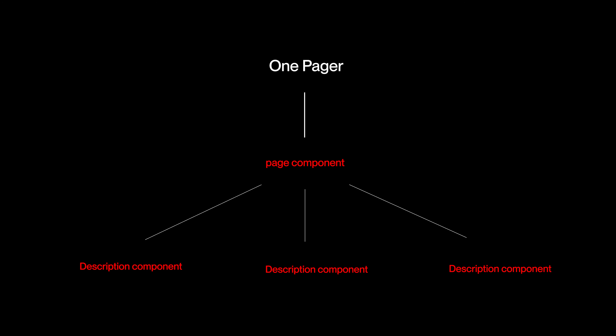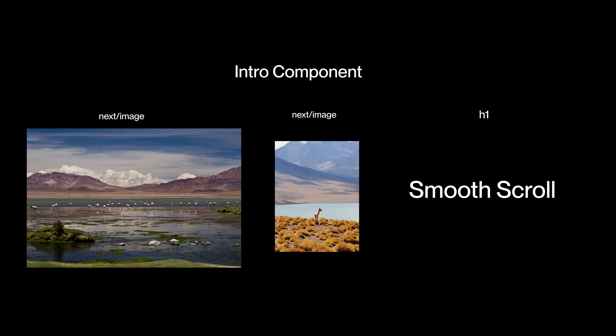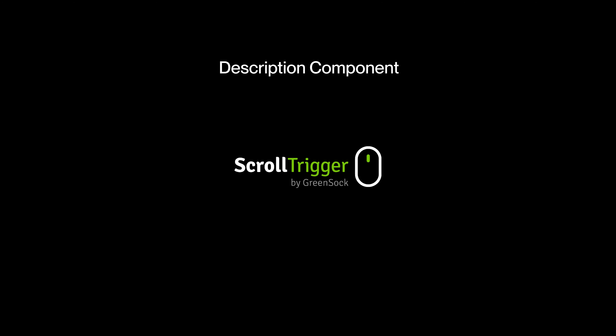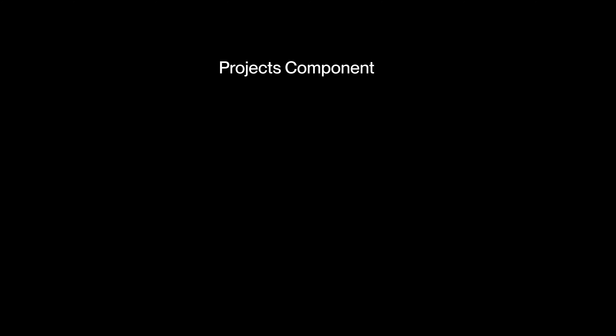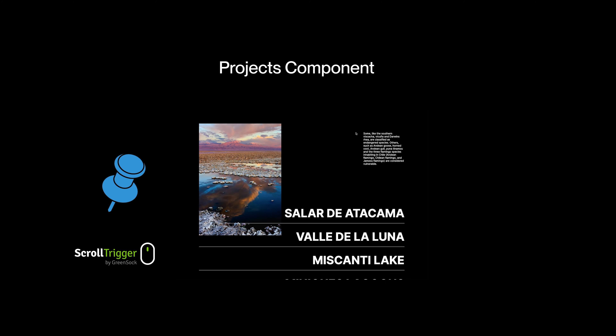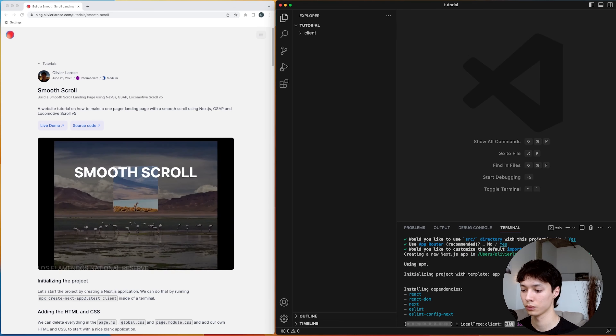We're gonna make a one-pager composed of four components. First, the page component which will initialize the Locomotive Scroll and import all other components. Then there's the intro component with a background, a main image, and a title — all animated with GSAP ScrollTrigger. After that, the description component with five paragraphs animated by scroll trigger, and finally the projects component with a pinned image that changes with state.